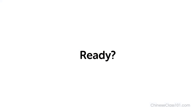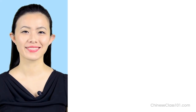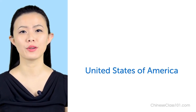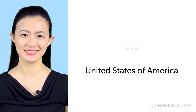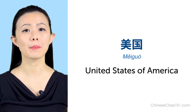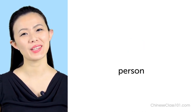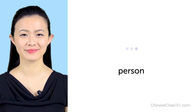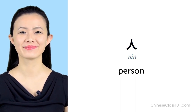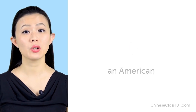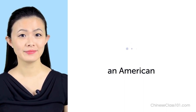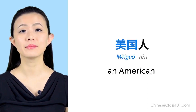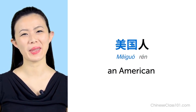Let's review. Respond to the prompts by speaking aloud, then repeat after me, focusing on pronunciation. Ready? Do you remember how to say United States of America? 美国. And how to say person? 人. Do you remember how to say American? 美国人.